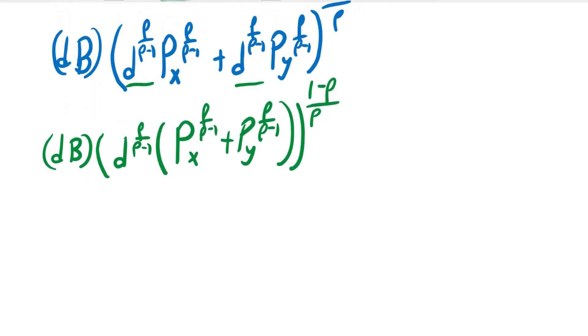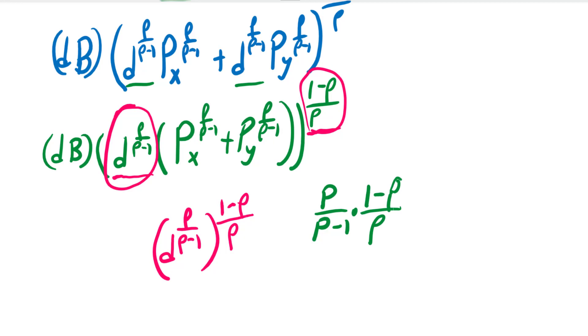And so now what we want to do is see what happens when we take this term and bring it outside the parentheses. We're going to have to raise it to (1-ρ)/ρ. So D^(ρ/(ρ-1)) raised to the (1-ρ)/ρ. Well, what's going to happen here is when we raise a power to a power we multiply those exponents. So we're multiplying those two fractional exponents together. We see that those two ρ's are going to cancel, and then we're left with (1-ρ)/(ρ-1).